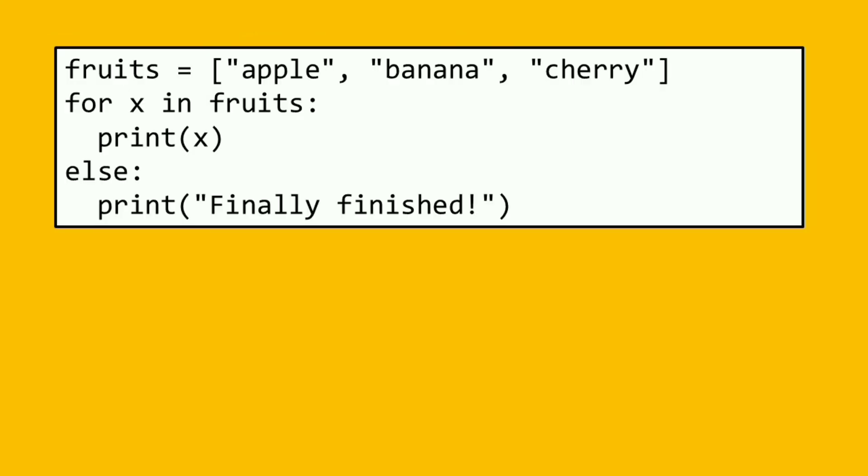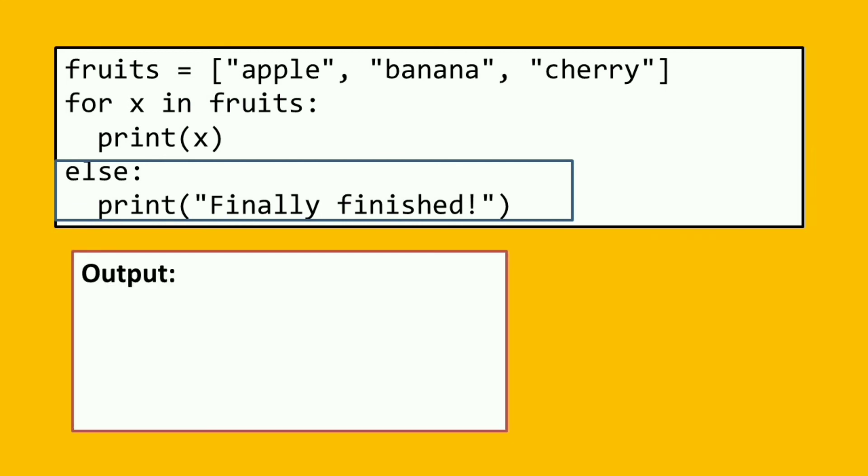Next example, we have this code. So here, meron tayong else ulit sa baba, print finally finished. So yung output po nyan guys, it will print all the elements inside the list name fruit. And then, once na na-print nyan ng lahat, the condition is false na kapag na-print na lahat. Tsaka niya gagawin yung else. Kaya map-reprint yung finally finished.